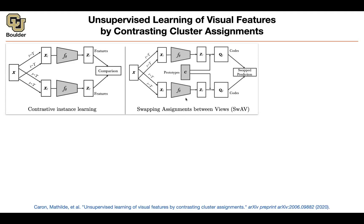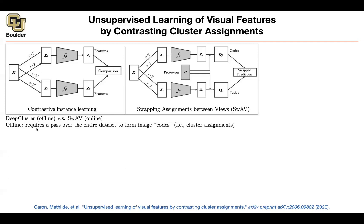Deep cluster is offline. SwAV is online. What do I mean by offline? When you are doing deep cluster, you need to take your entire dataset of images, push them through your neural network, get your codes — which come out of cluster assignments and k-means — and use those codes to backpropagate and train your network. But you need to do this over your entire dataset, and that's a bottleneck. K-means over the entire dataset is going to be expensive. Can you do better? Let's try to borrow ideas from contrastive learning.